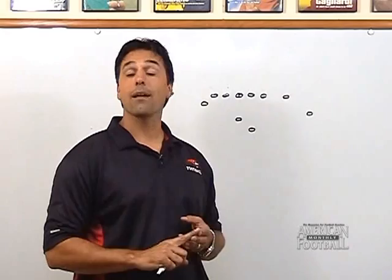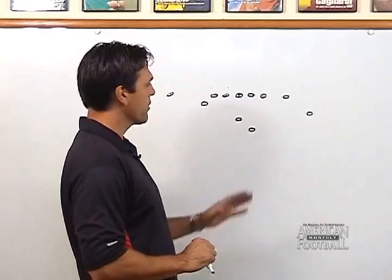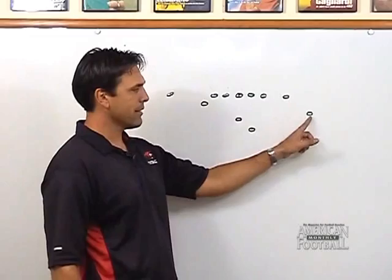First thing, let's talk about the receiver routes in the waggle. I've got drawn up here a flex — that's our tight end — that's our sweeper, our wing, our X, quarterback and halfback.